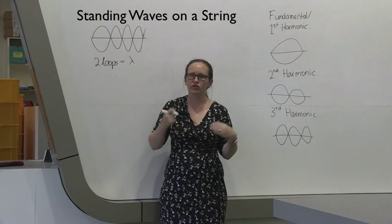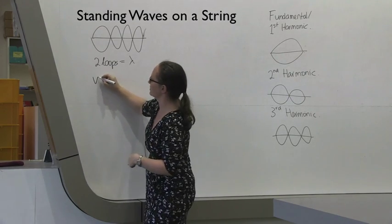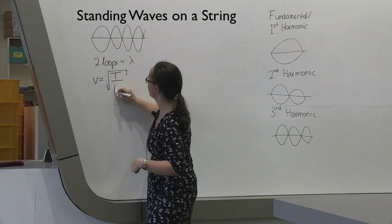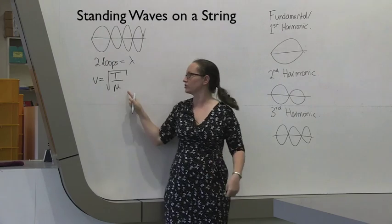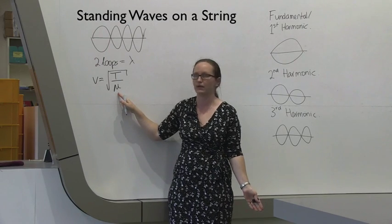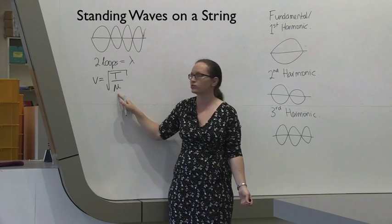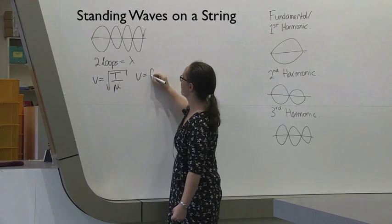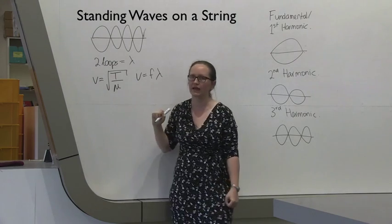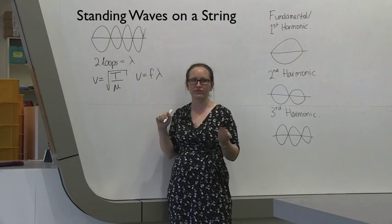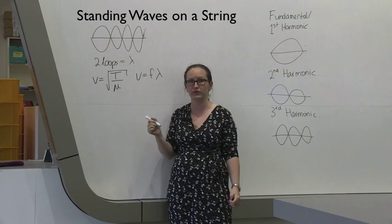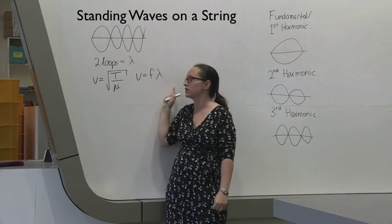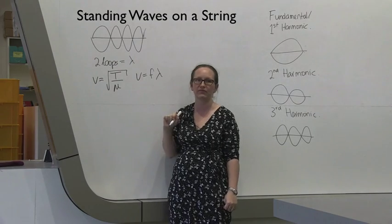You're going to be making use of the formula that the velocity of the wave is equal to the square root of the tension over the mass per unit length, in order to work out what mu is, the mass per unit length. In order to do this, you're going to need to know what v is. For waves, v is given by f lambda. You'll be able to measure f because you'll have a frequency generator and this will tell you what the frequency is. Lambda you're going to measure from the standing waves using the fact that two loops is one wavelength.